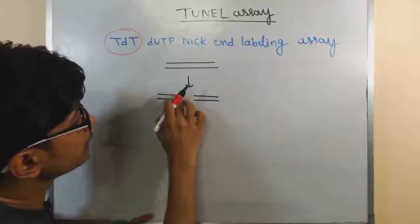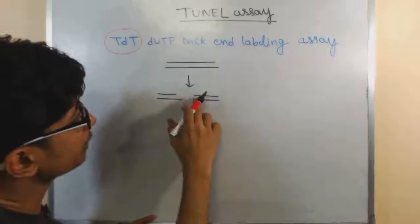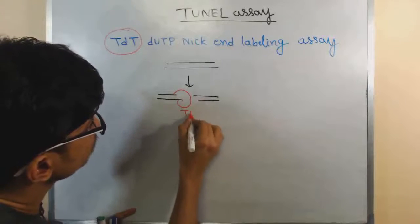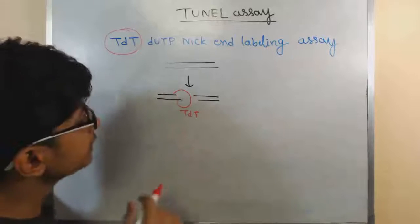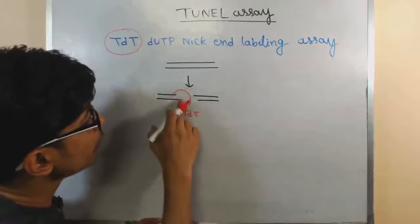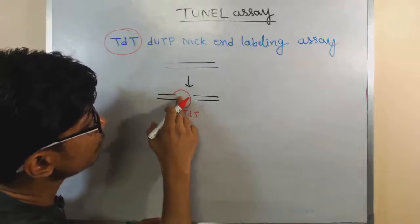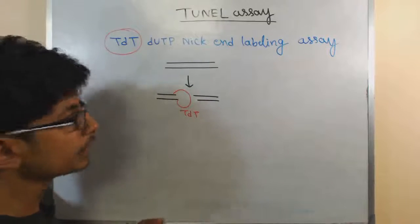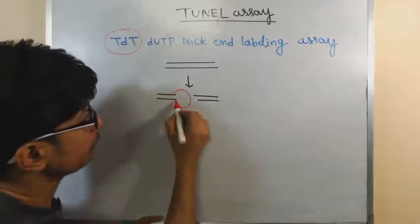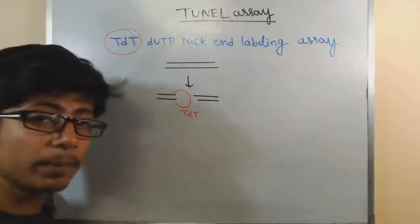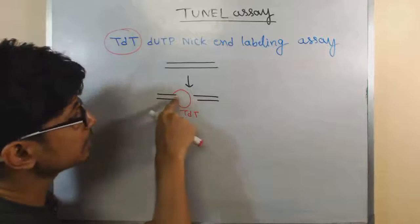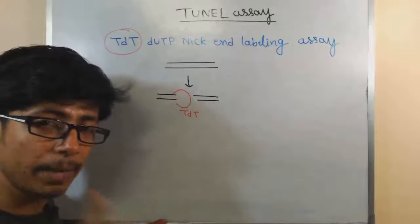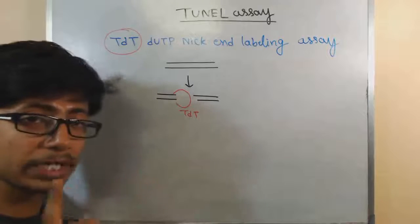So, what TDT can do here, let's say the double-stranded break can be of different type. Now, TDT will bind with it and TDT has functions of making this NIC. They will chop some of the nucleotide portion if there is any uneven end and make it a blunt end. This is very important, they first make it a blunt end. Once the blunt end NIC, this is the blunt end, this is the overhang end. So, once they prepare this blunt end of those double-stranded breaks of DNA.